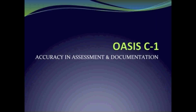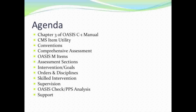This instruction covers the OASIS C-1 Accuracy and Assessment and Documentation. The agenda includes Chapter 3 of the OASIS C-1 Manual, the CMS Item Utility, Conventions, Comprehensive Assessment, OASIS M Items, Assessment Sections, Interventions and Goals, Orders and Disciplines, Skilled Nurse Interventions we need in the Plan of Care, Supervision, the OASIS Check PPS Analysis, and Support.